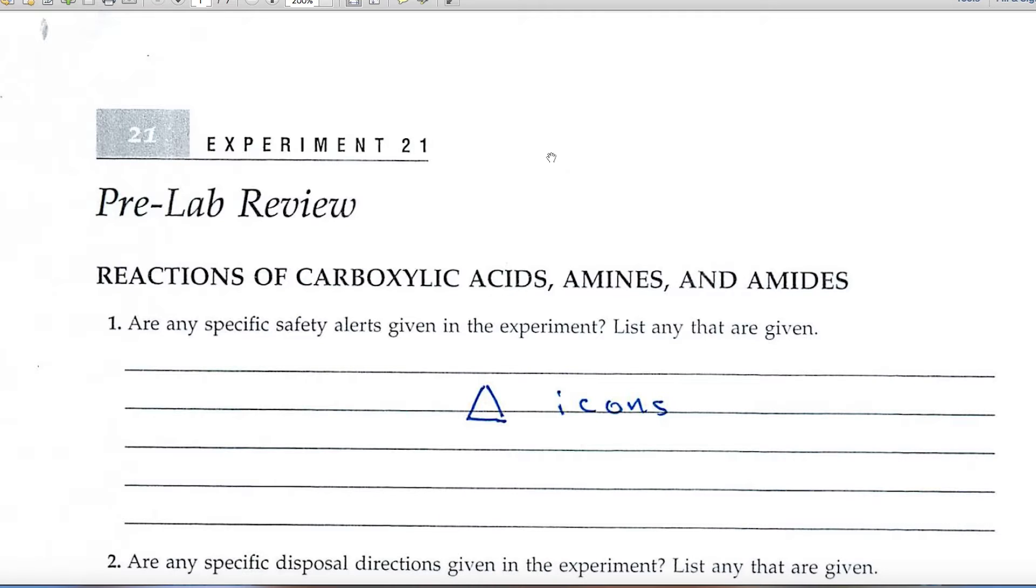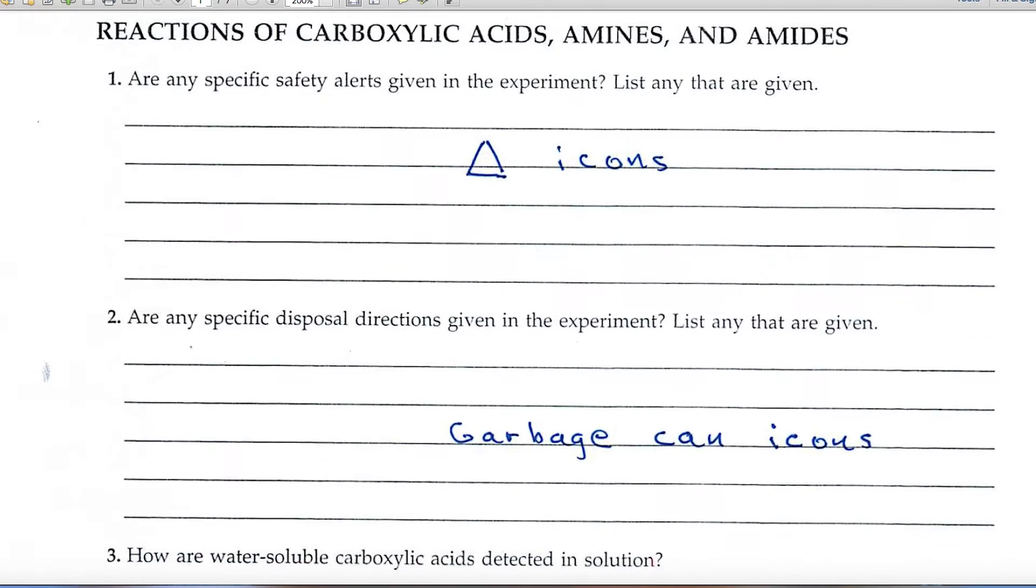Let's go to the preview sheet. Question number one always is the same. Are there any specific safety alerts given in the experiment? And again, you'll look for those triangular icons to guide you.